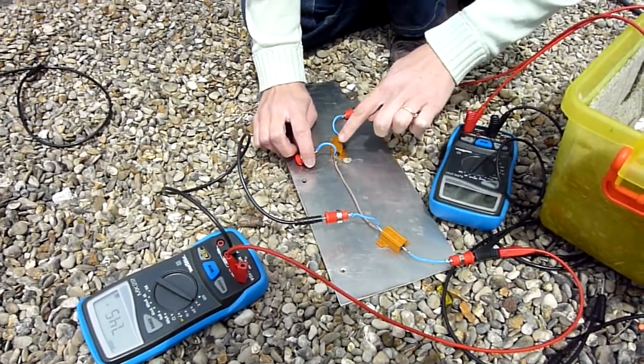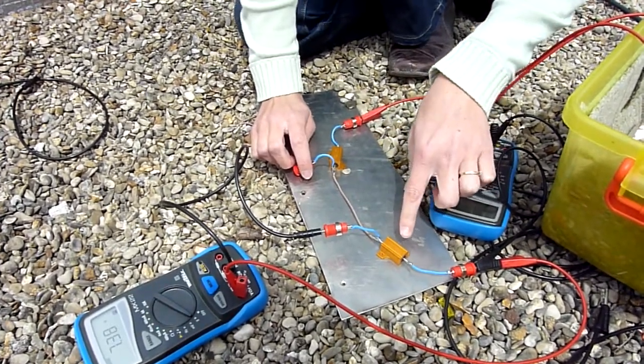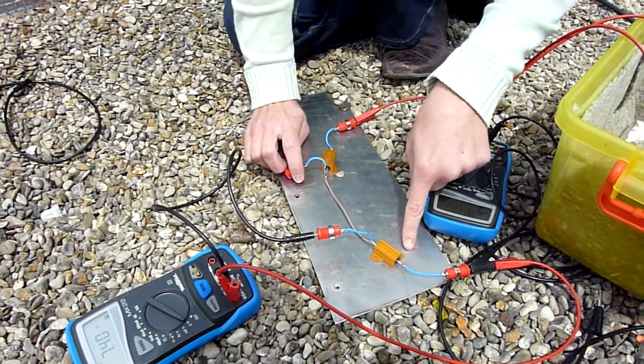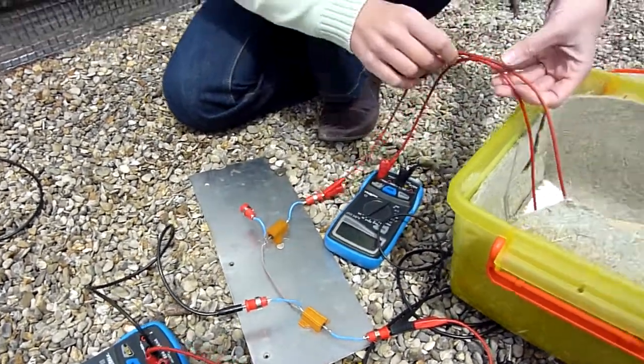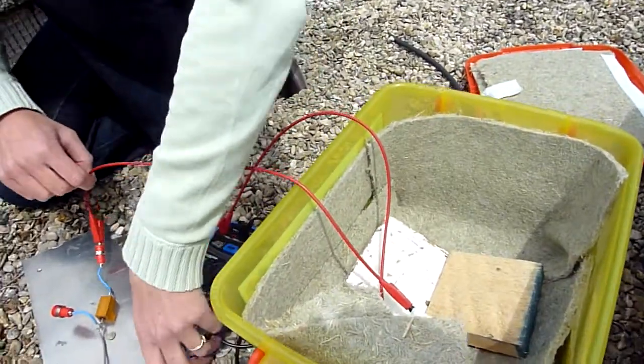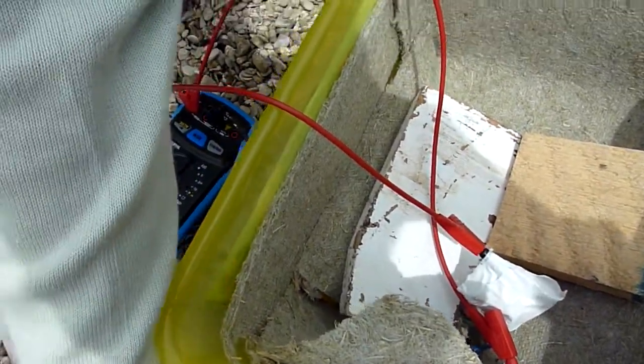These are 10 ohms and they support 25 watts. And so, coming from the solar panel, we make a series circuit.